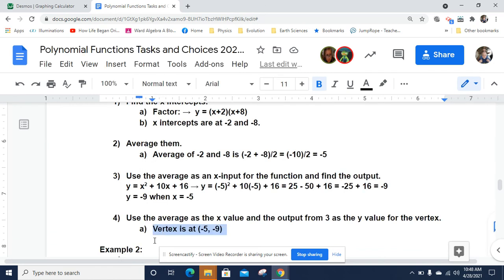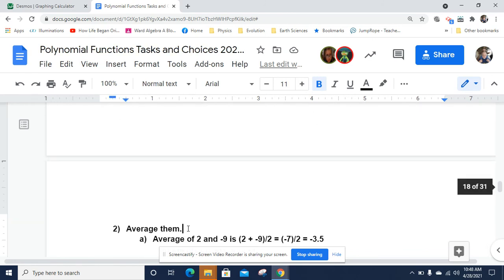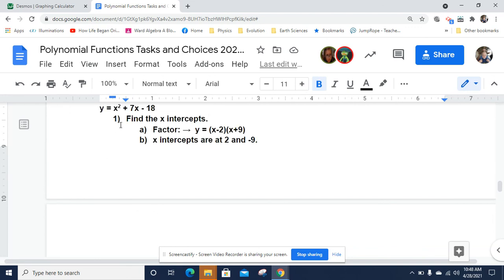And we get a vertex of y is negative 9 when x is negative 5. And there it is. There's your vertex negative 5, negative 9. And I did a second example where you're going to end up with some fraction-y stuff.